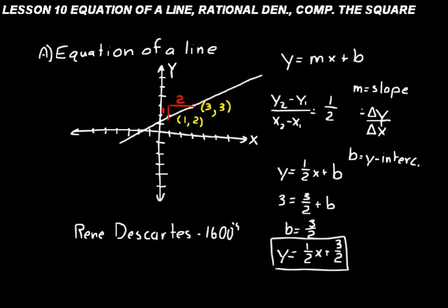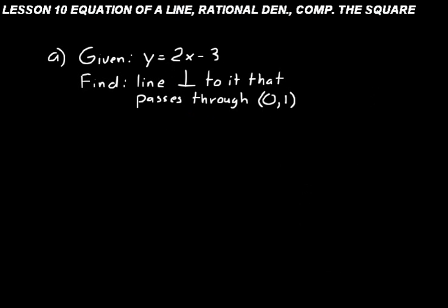The y-intercept is almost always determined after you've found the slope by substituting one of the known points into the equation. Let's do another practice problem. Given y equals 2x minus 3, find the line perpendicular to it that passes through the point 0 comma 1.